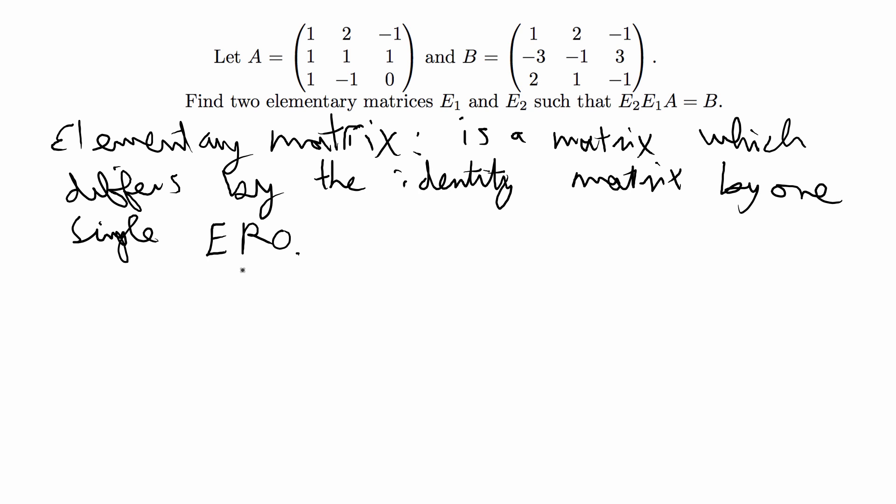To solve a problem like this, we want to take the matrix that's being multiplied, which is matrix A, and then perform two elementary row operations on it to get matrix B. We know it's two because we need two elementary matrices, so we want to do elementary row operation 1 and elementary row operation 2 to get matrix B, and then from these elementary row operations you can get the elementary matrices.